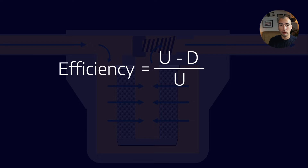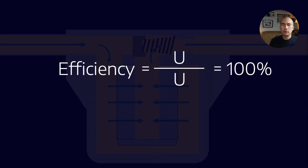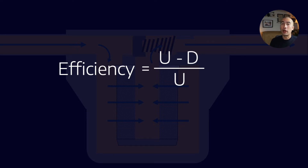It would be easy to put this in efficiency terms. The efficiency of the filter is another way of categorizing filter performance — we describe it as the difference between upstream and downstream divided by the initial upstream value. So if we have zero particles downstream, that describes a filter which is 100% efficient — it has removed all of the particles. Similarly, if U and D were equal, this would imply an efficiency of zero percent — the filter hasn't removed anything.